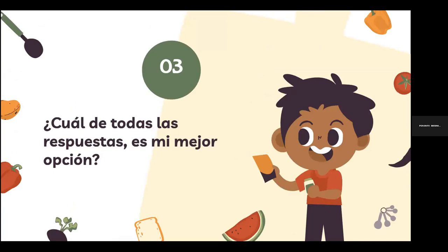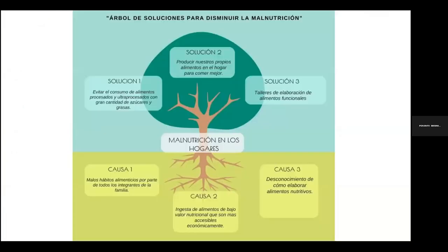¿Cuál de todas las respuestas fue la mejor opción? Las que ellos decidieron. La comunidad identificó tres causas probables de su malnutrición: los malos hábitos alimenticios por parte de los integrantes de la familia, la ingesta de alimentos de bajo valor nutricional que son accesibles económicamente pero no nutritivos, y el desconocimiento de cómo elaborar los alimentos. Sus soluciones fueron evitar el consumo de alimentos procesados y ultraprocesados, producir los propios alimentos mediante huertos familiares y hacer talleres para la elaboración de alimentos funcionales.